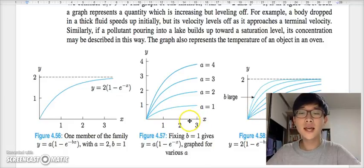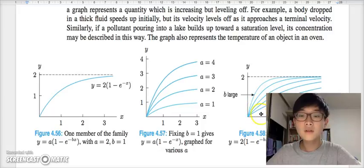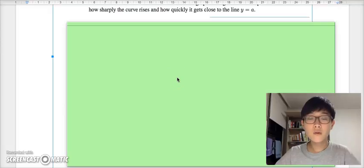First, let's fix the value of b as b equals 1 and vary the value of a. We may notice that as the value of x increases, the value of y approaches the value of a, which in other words could be explained as the value of a is the upper bound of these functions. Let's take a look at figure 4.58. Fixing the value of a at a equals 2, the upper bound is set as 2. Varying the value of b, you may notice that the larger the value of b is, the more sharply the value of y is approaching the upper bound.